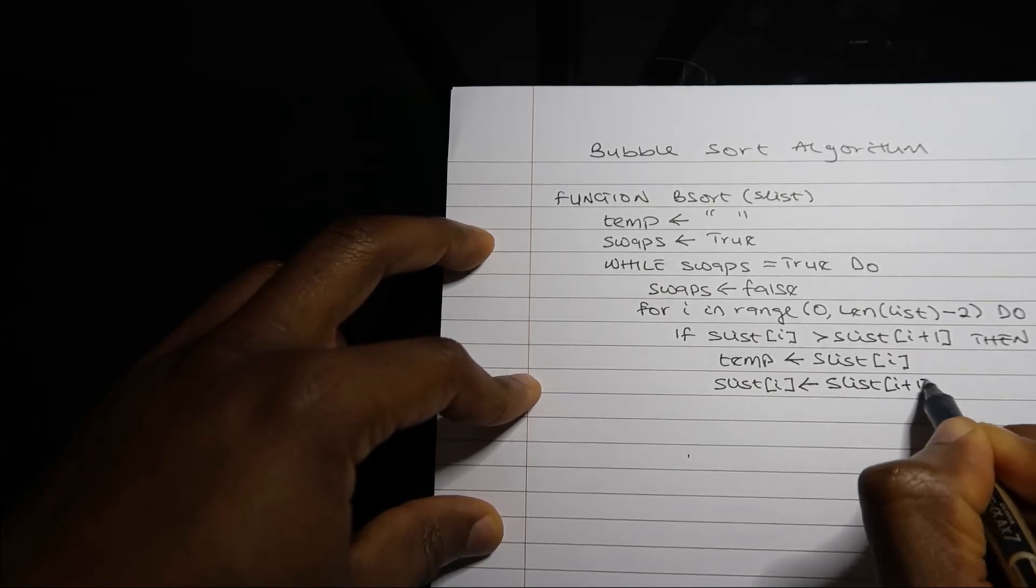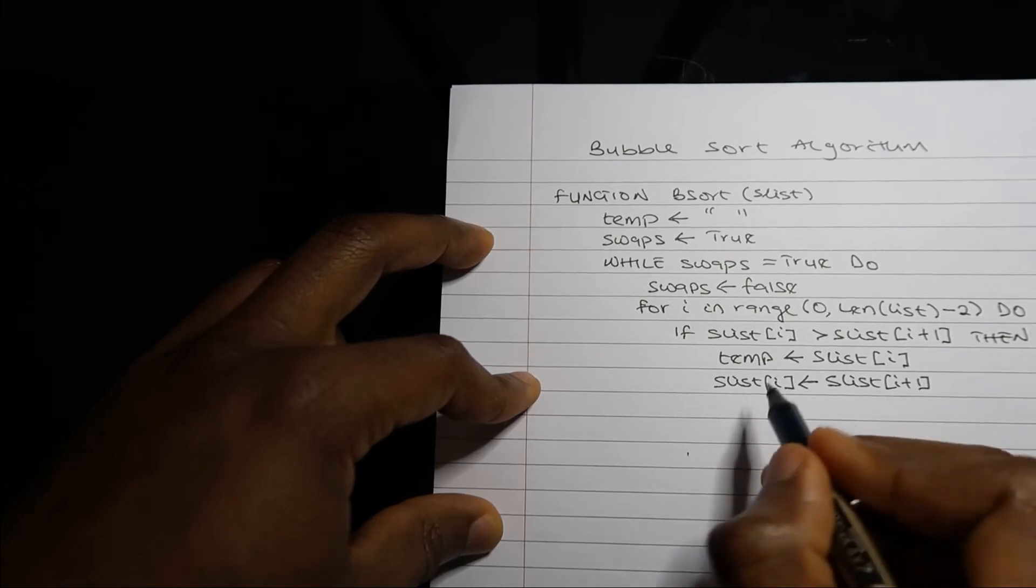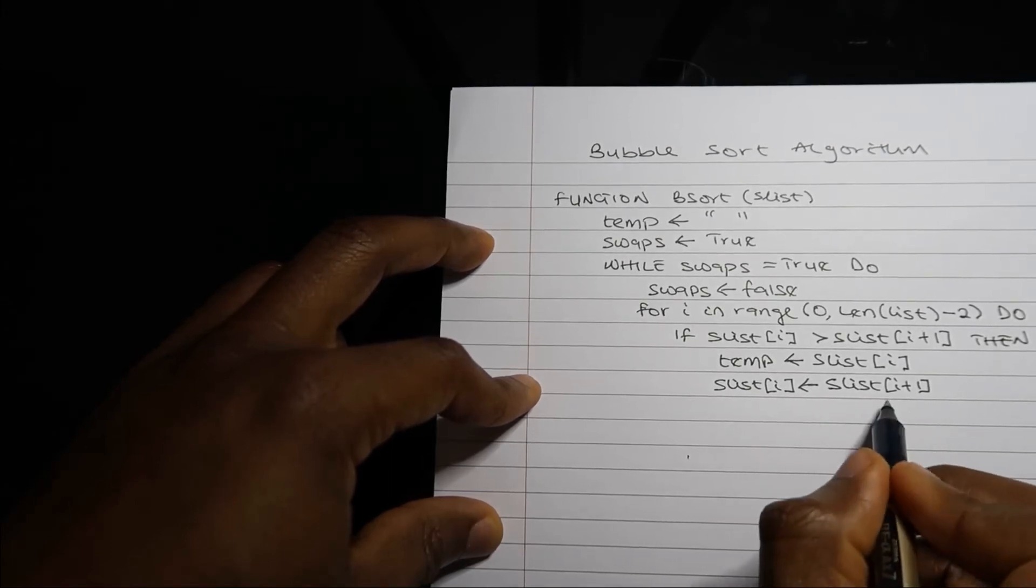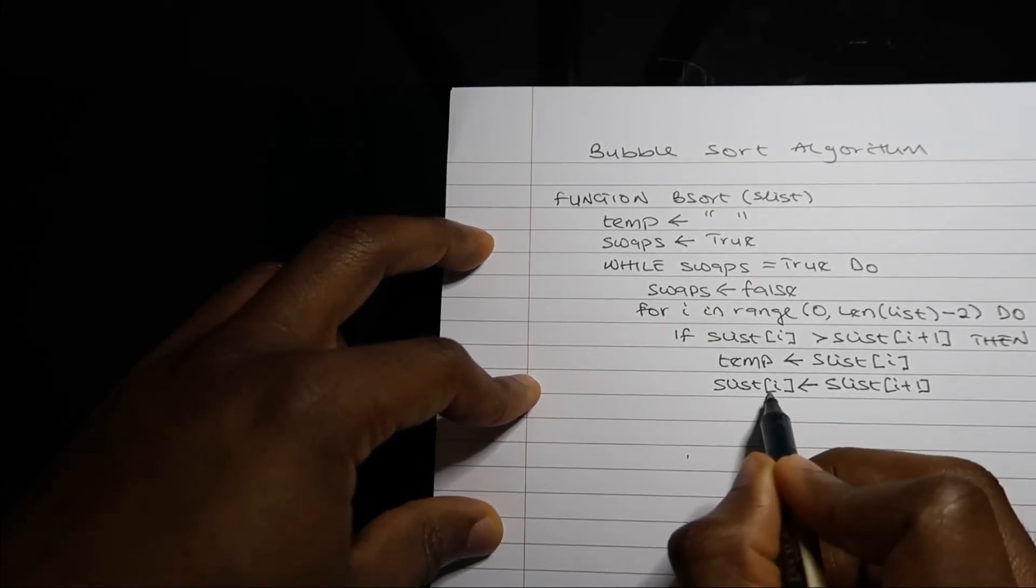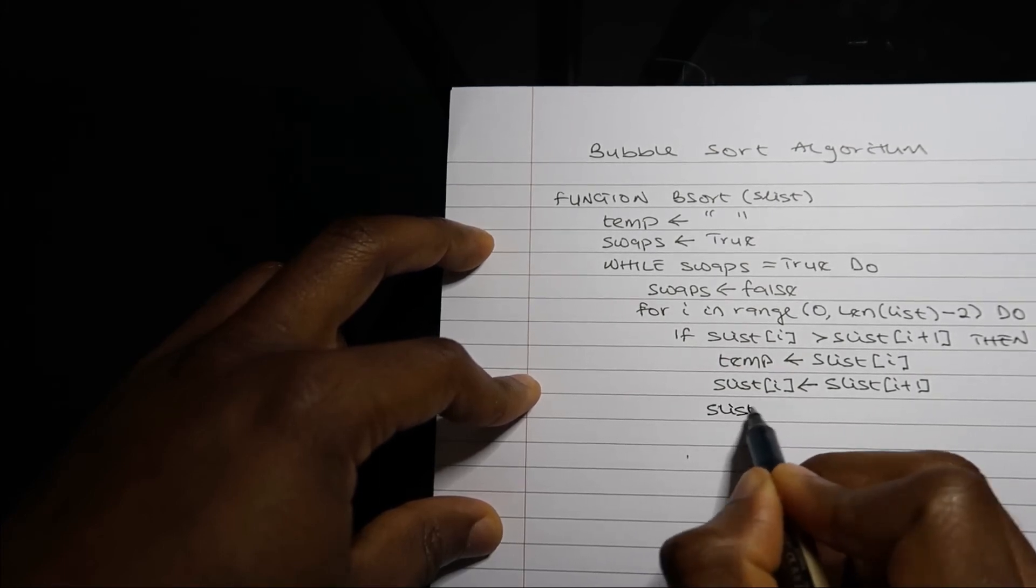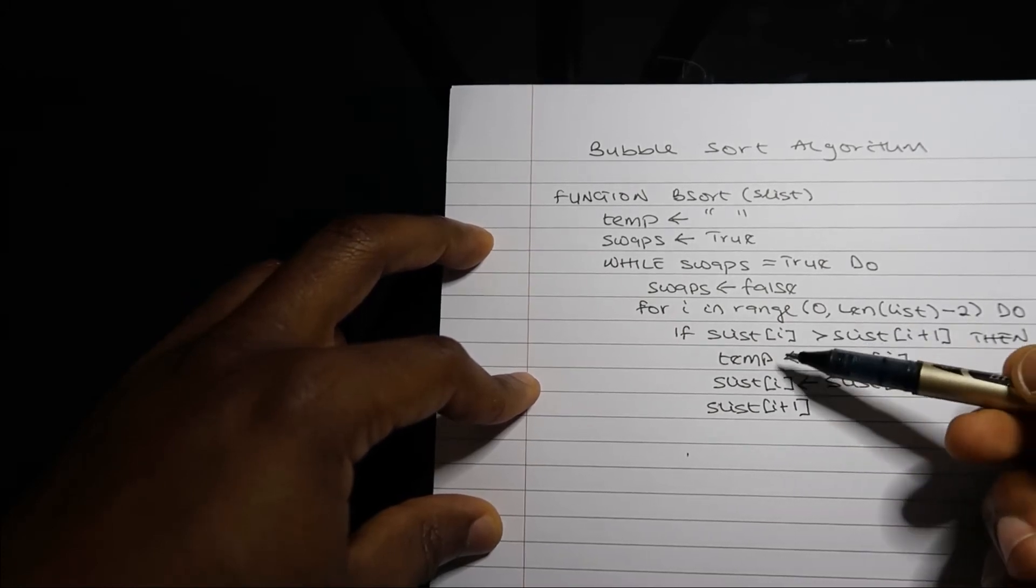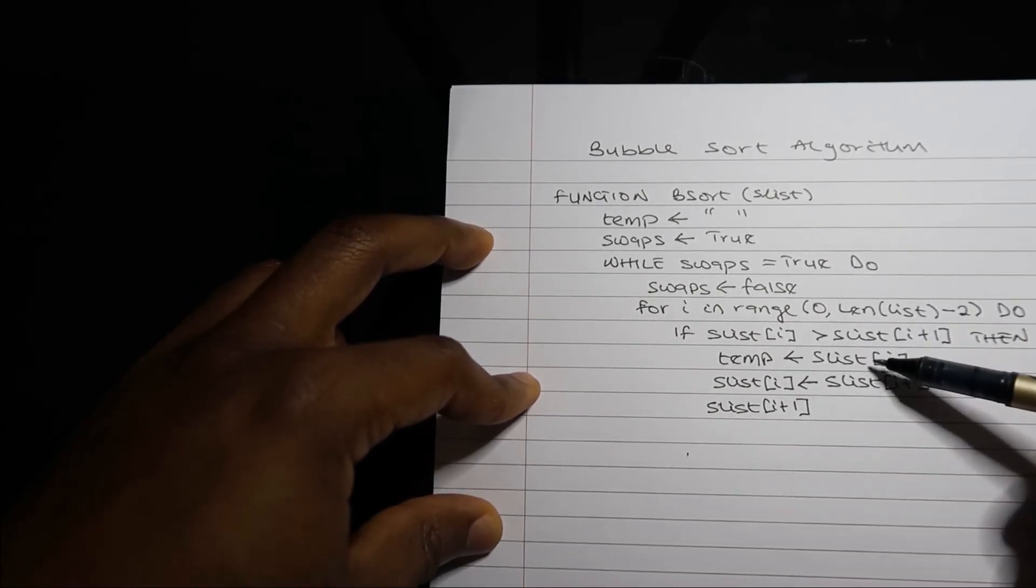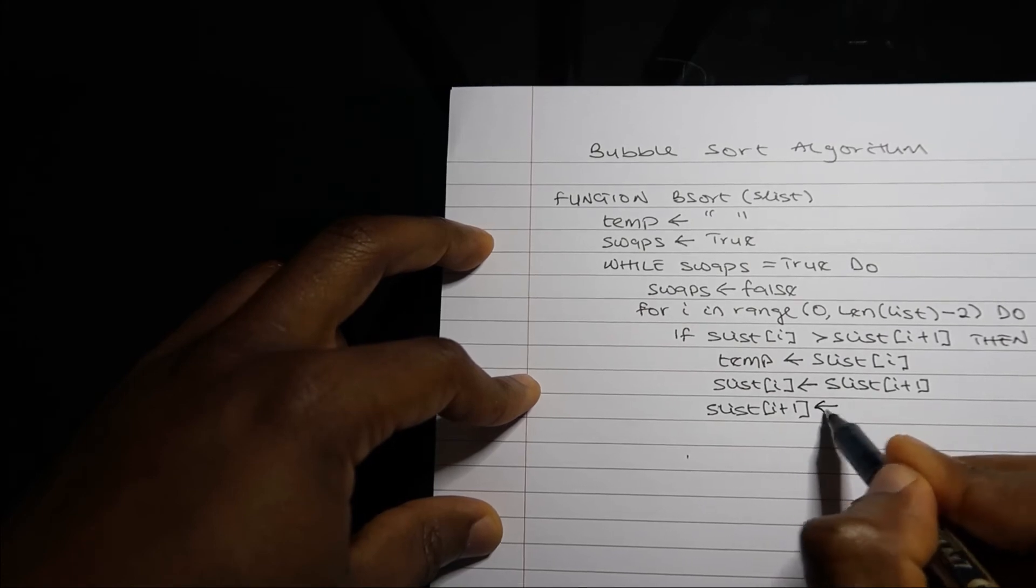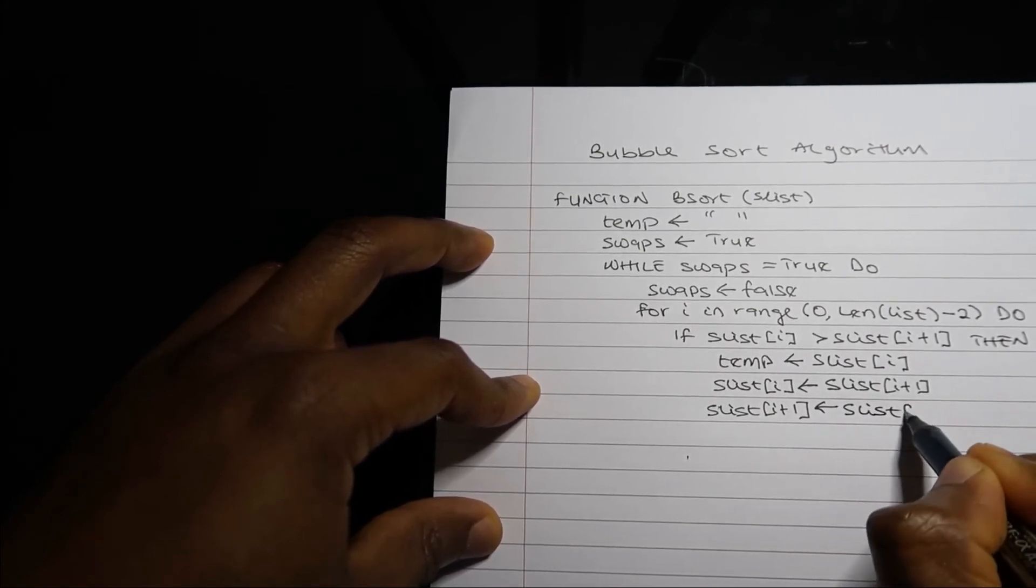Put the value slist[i+1]. And then, because I've transferred this value to slist[i], I'll then go to slist[i+1] and put my temporary variable, which currently holds slist[i].